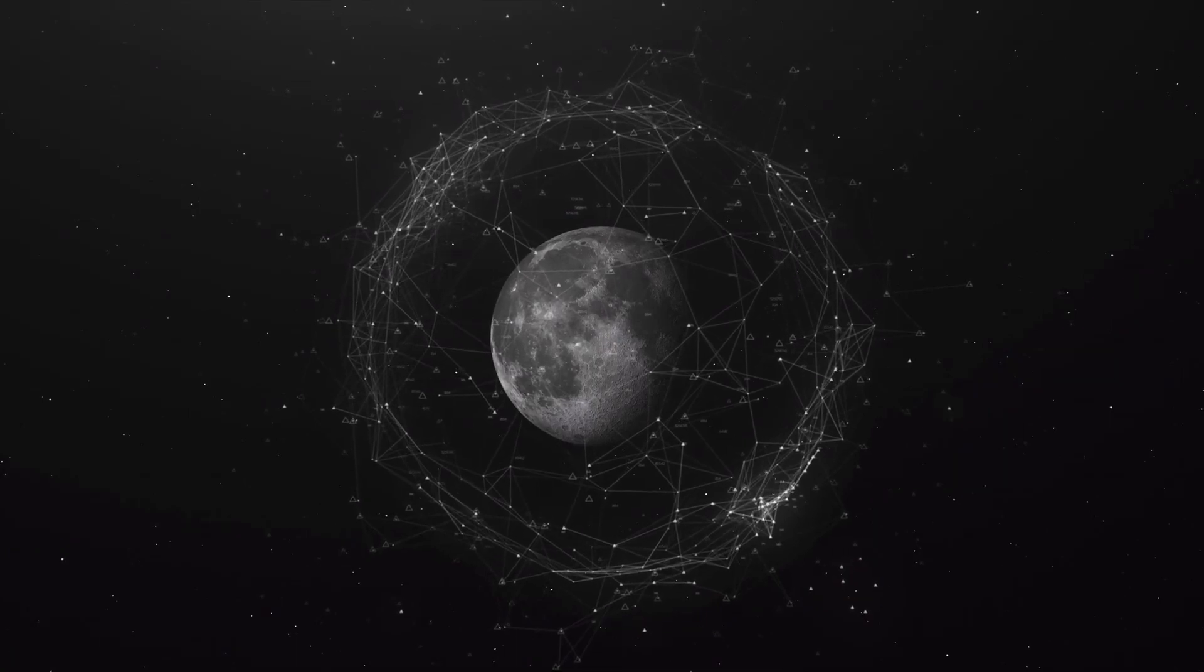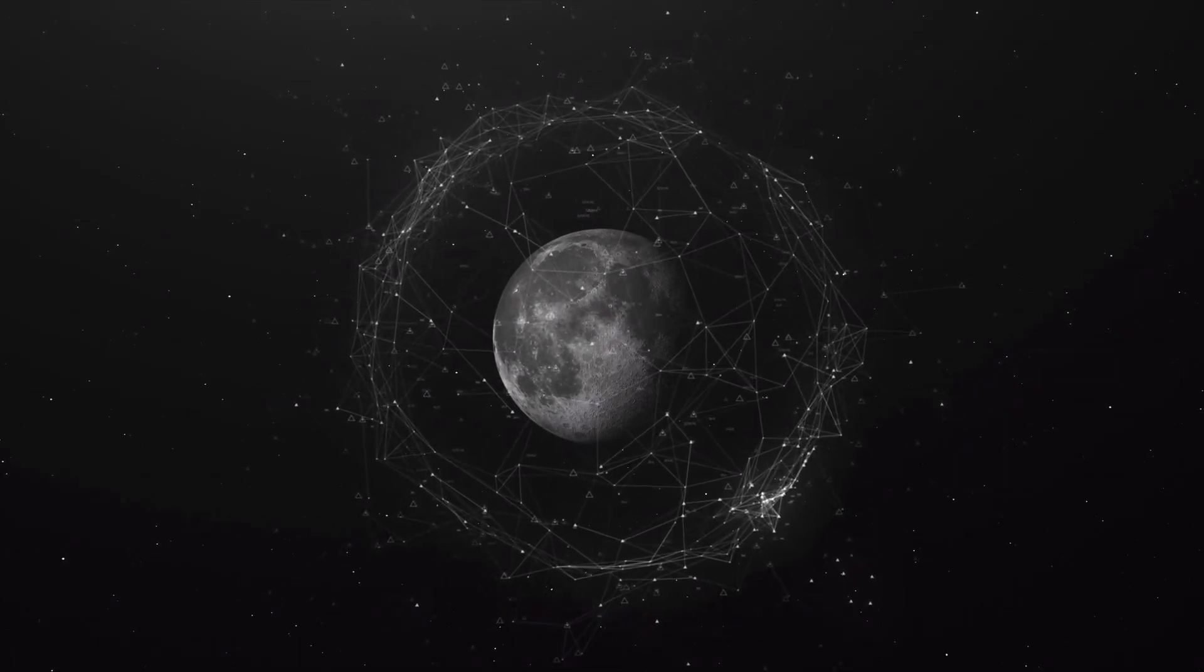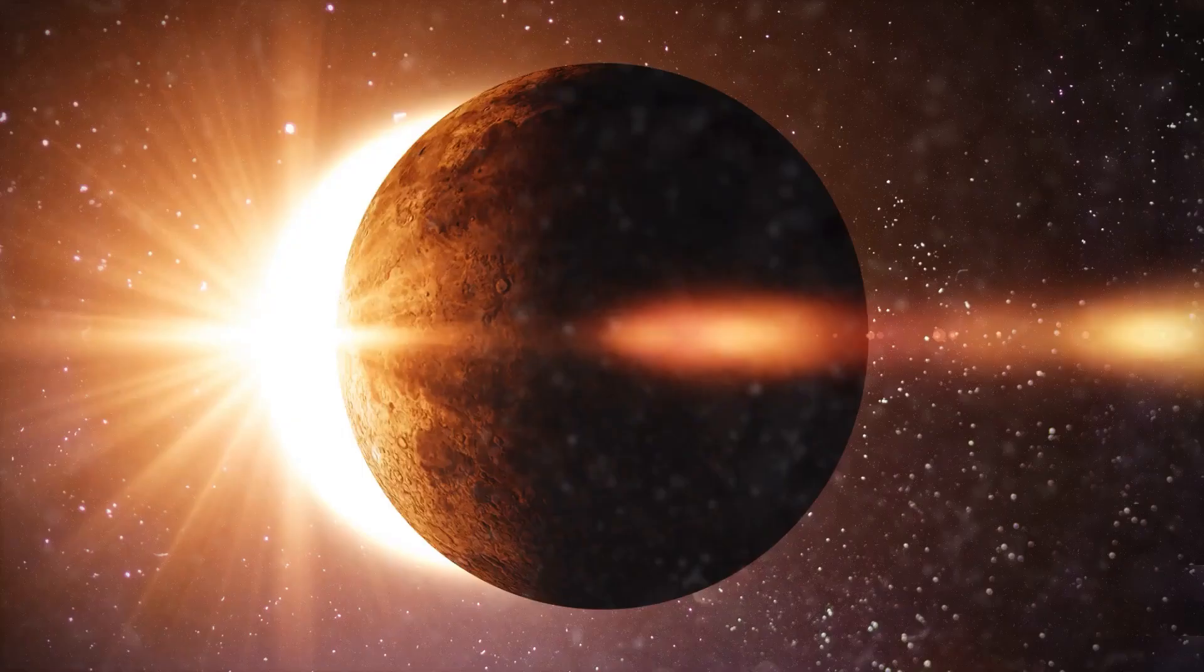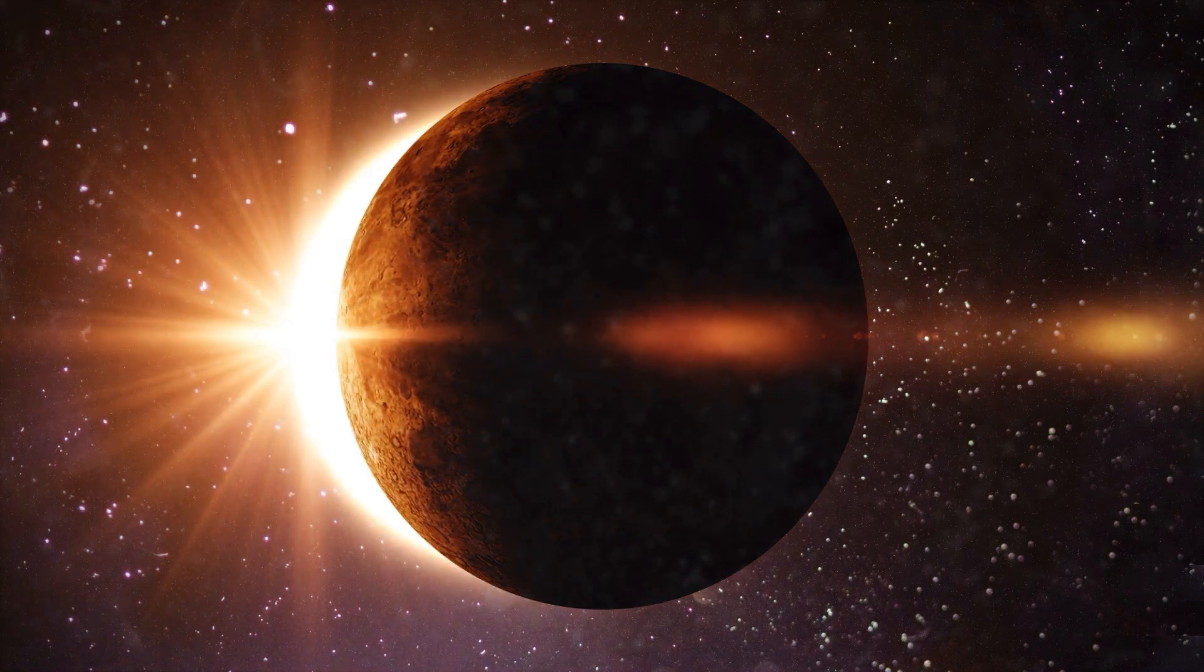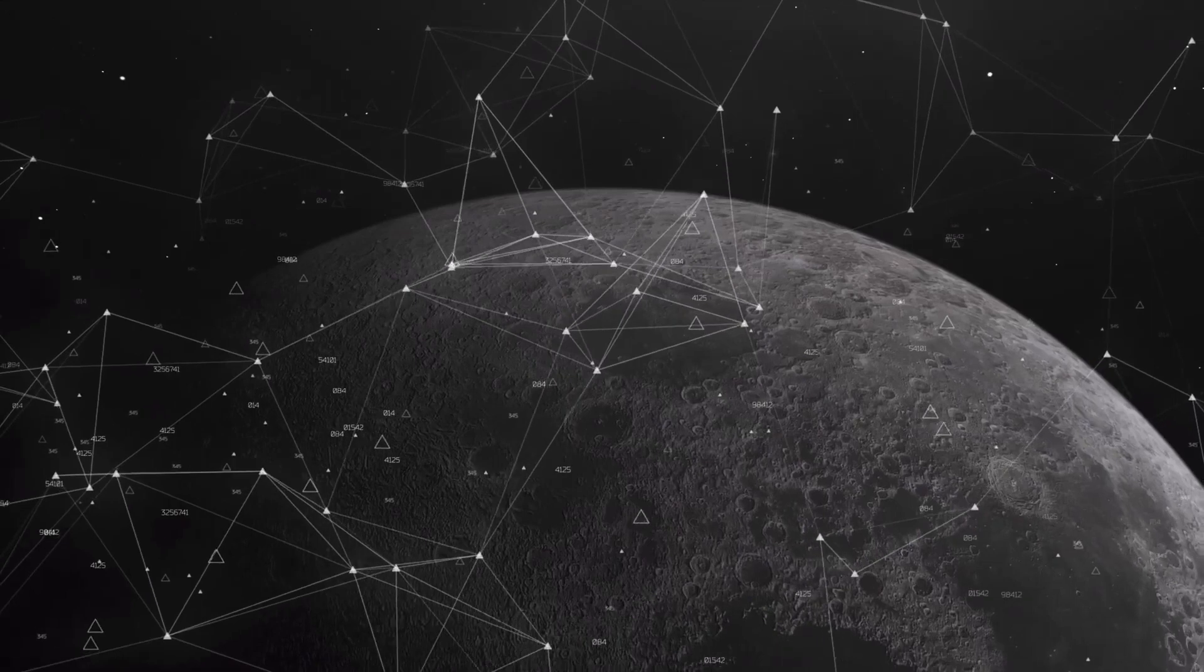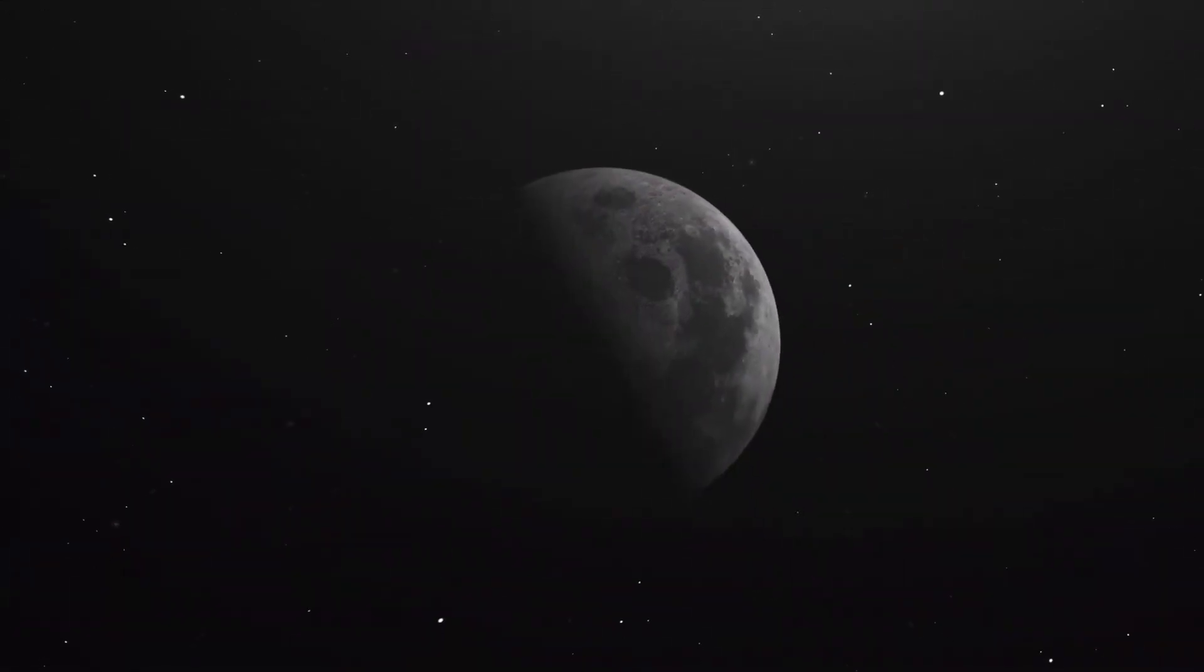According to their modeling, the outer core has a radius of about 362 kilometers (225 miles), and the inner core has a radius of about 258 kilometers (160 miles). That's about 15% of the entire radius of the Moon.